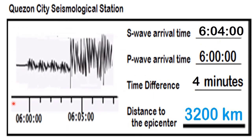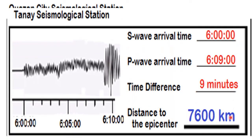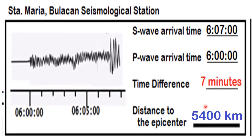Following the procedure of step three, we obtain the following data. For Quezon City Seismological Station, the distance to the epicenter is 3,200 kilometers. For Tanay Seismological Station, the distance to the epicenter is 7,600 kilometers. For Santa Maria Bulacan Seismological Station, we obtained 5,400 kilometers.